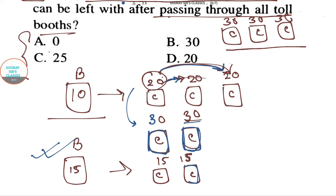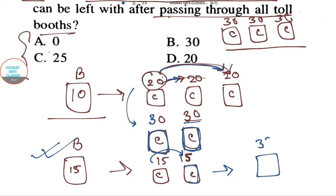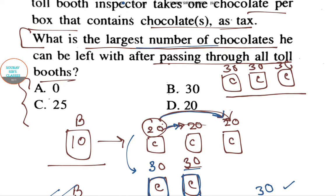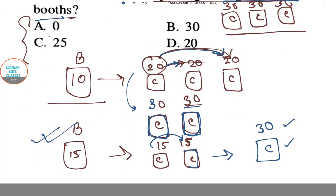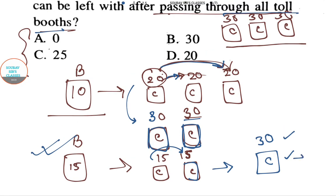Now he transfers the 15 chocolates from one box into the other, ending up with one box containing 30 chocolates. After passing five more toll booths he will have 25 chocolates remaining in that one box.